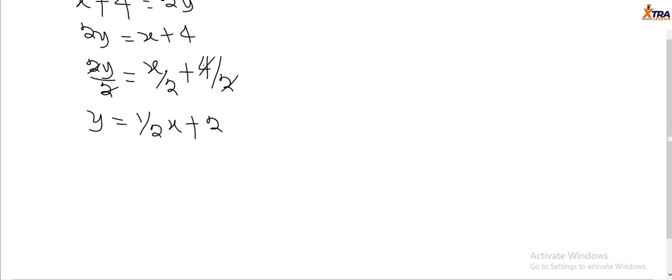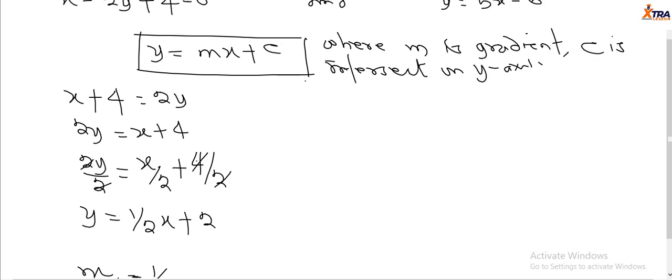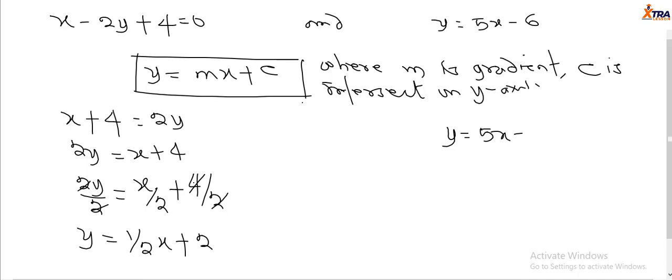So our gradient here is m1 equals 1 over 2. This is equation 1. For the second equation, y equals 5x minus 6, the gradient is m2 equals 5.